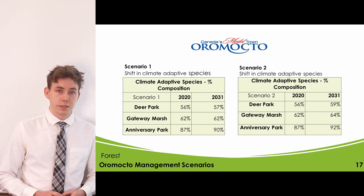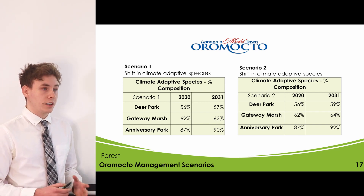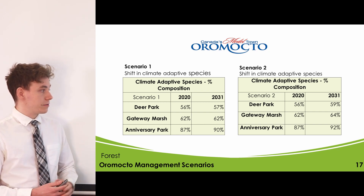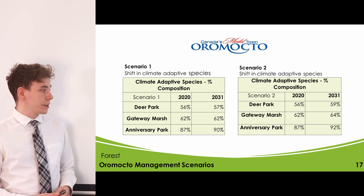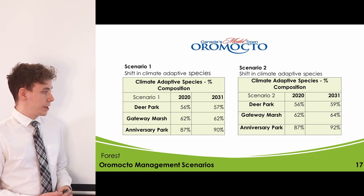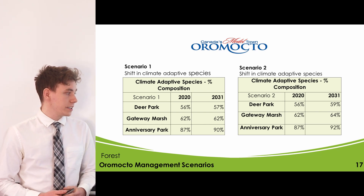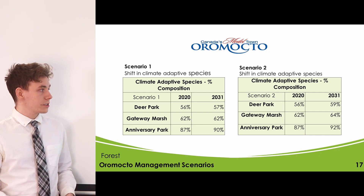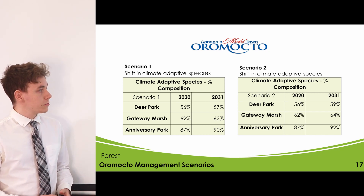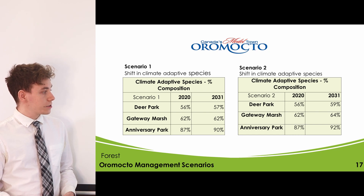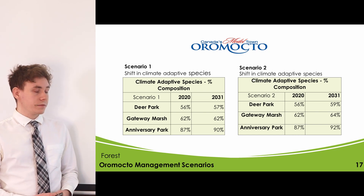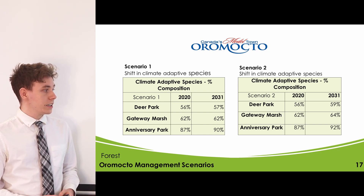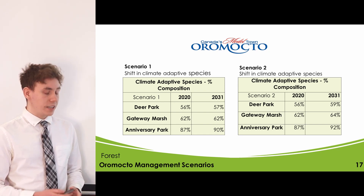We also extracted climate-adaptive species composition from the initial inventory and the forecasted data. Under Scenario 1, Deer Park went from 56% to 57%, Gateway Marsh stayed at 62%, and Anniversary Park increased from 87% to 90%. Under Scenario 2, Deer Park increased from 56% to 59%, Gateway Marsh from 62% to 64%, and Anniversary Park from 87% to 92%.